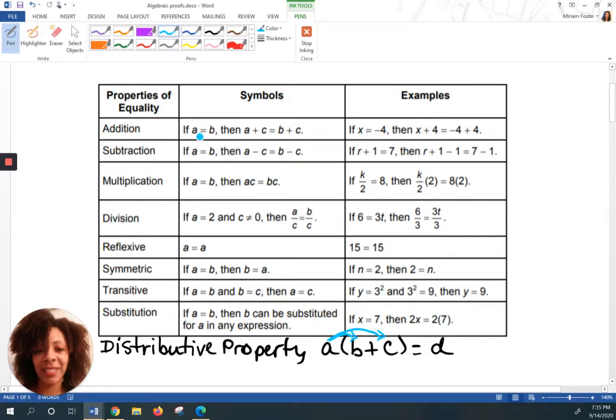Going back to the properties of equality step-by-step. For addition, if A is equal to B, then A plus C is equal to B plus C. So I just added C on both sides. That's called the addition property of equality. And this is what it looks like if you're referring to numbers. So X was negative 4, and then in this case, you just added 4 to both sides.